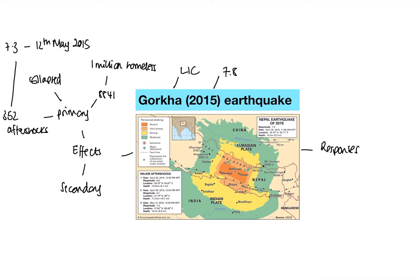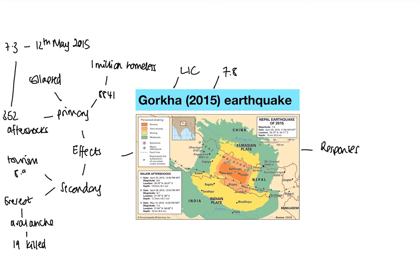Moving to secondary effects, there are some more devastating impacts. Everest base camp was hit by an avalanche triggered by the earthquake, and 19 people were killed as a result. Tourism was also impacted — tourism is massive for Nepal, making up 8.99% of their GDP.